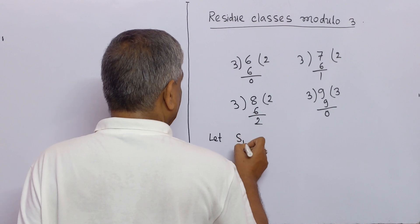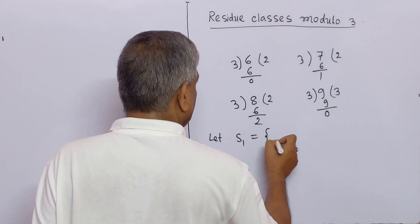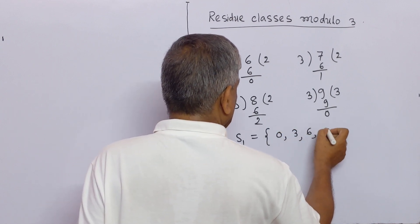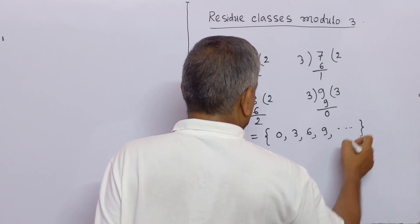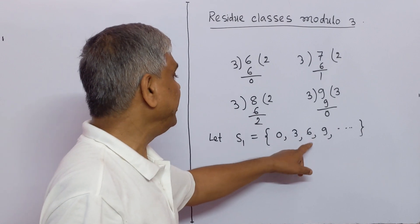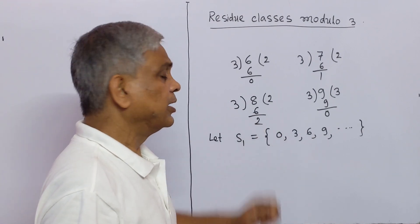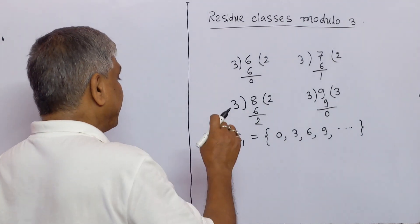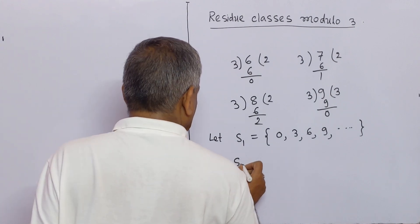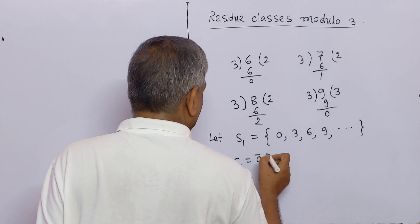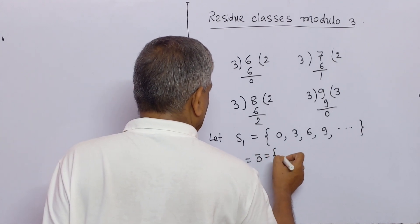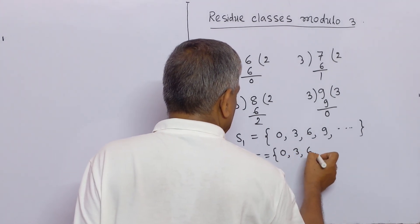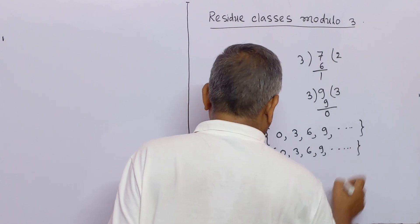Let S1 be a set containing elements 0, 3, 6, 9, ... If we divide any integer of this set by 3, we get remainder 0. So we may write this set as S1 equal to 0̄, which is the set containing integers {0, 3, 6, 9, ...}.